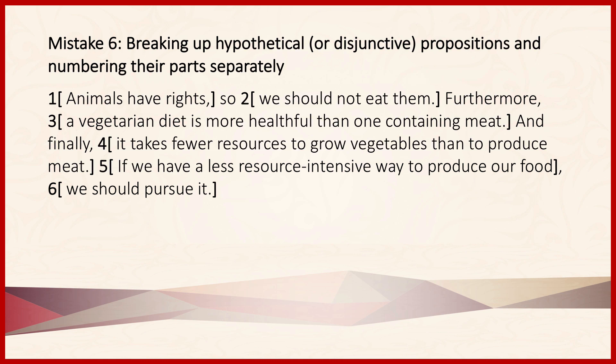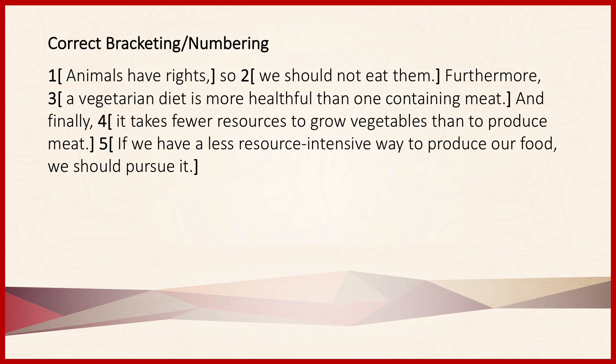Looking at the proper way to bracket and number this argument, we get: Number 1, animals have rights. So, number 2, we should not eat them. Furthermore, 3, a vegetarian diet is more healthful than one containing meat. And finally, 4, it takes fewer resources to grow vegetables than to produce meat. 5, if we have a less resource-intensive way to produce our food, we should pursue it.